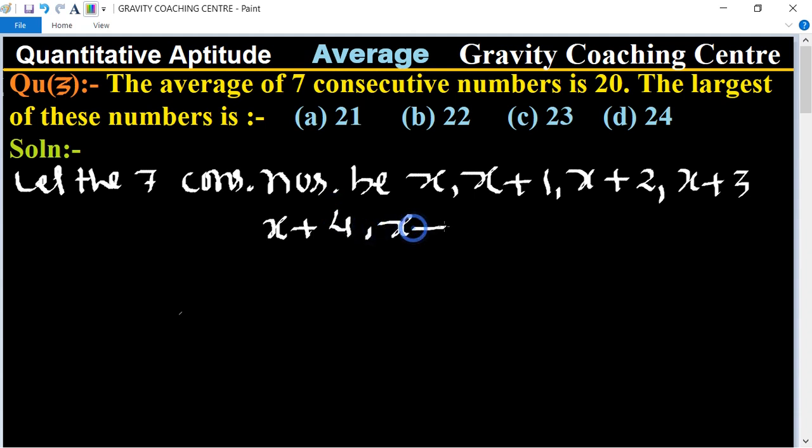According to the question, the average of seven consecutive numbers is given. So the average of seven consecutive numbers is 20.